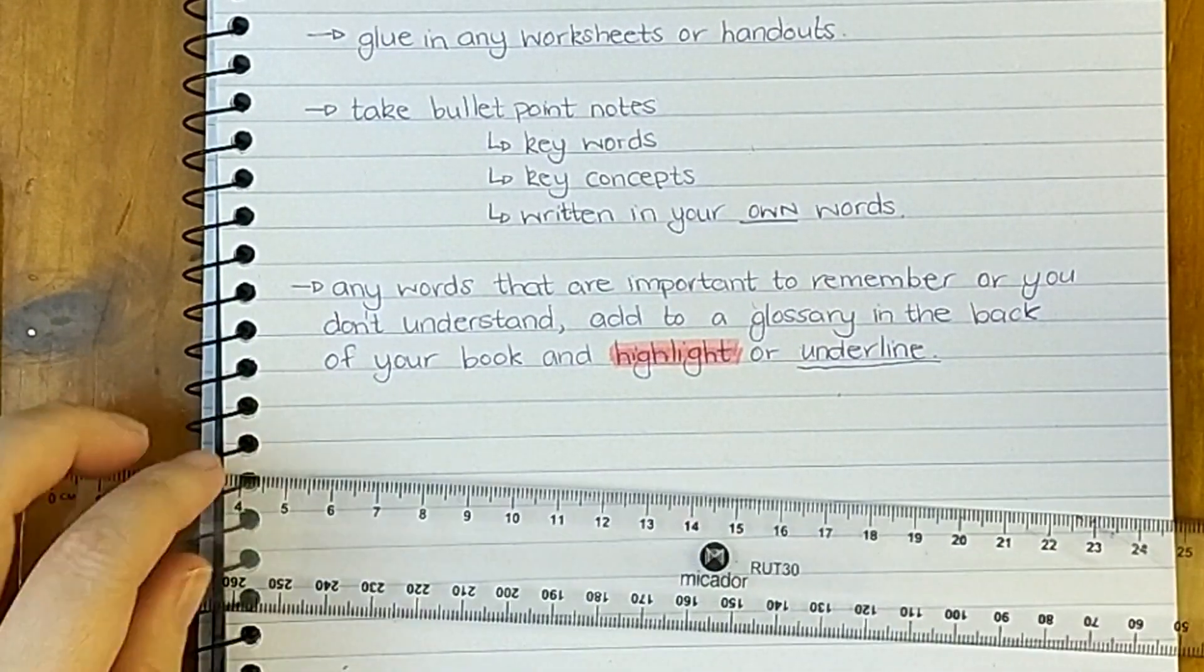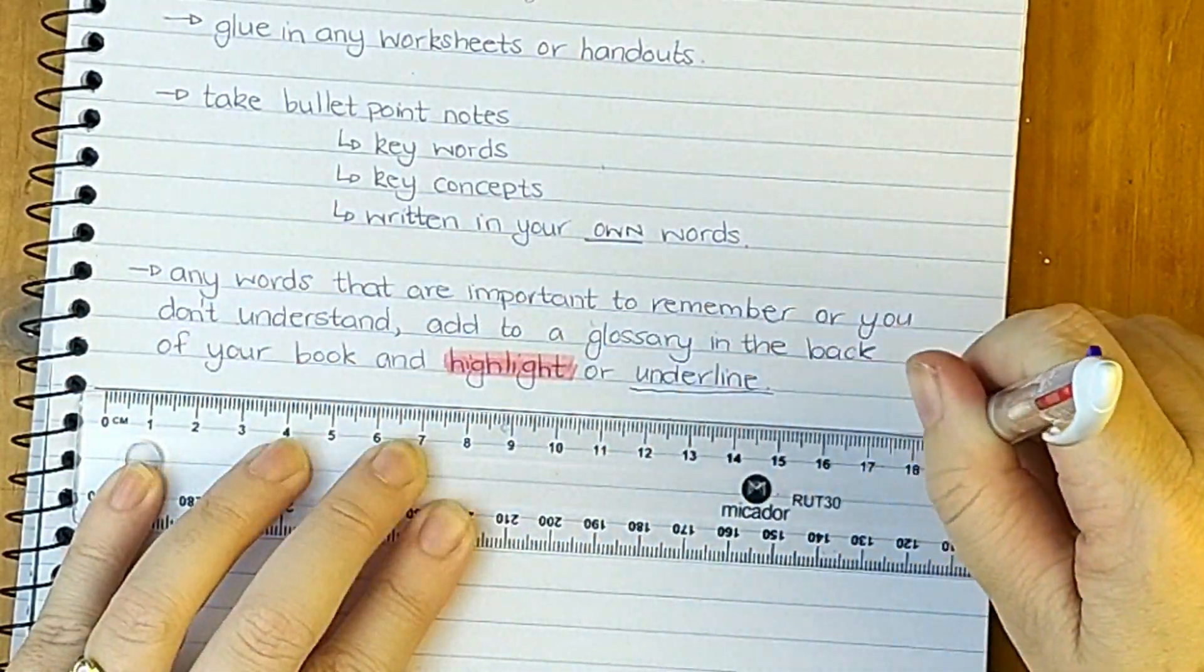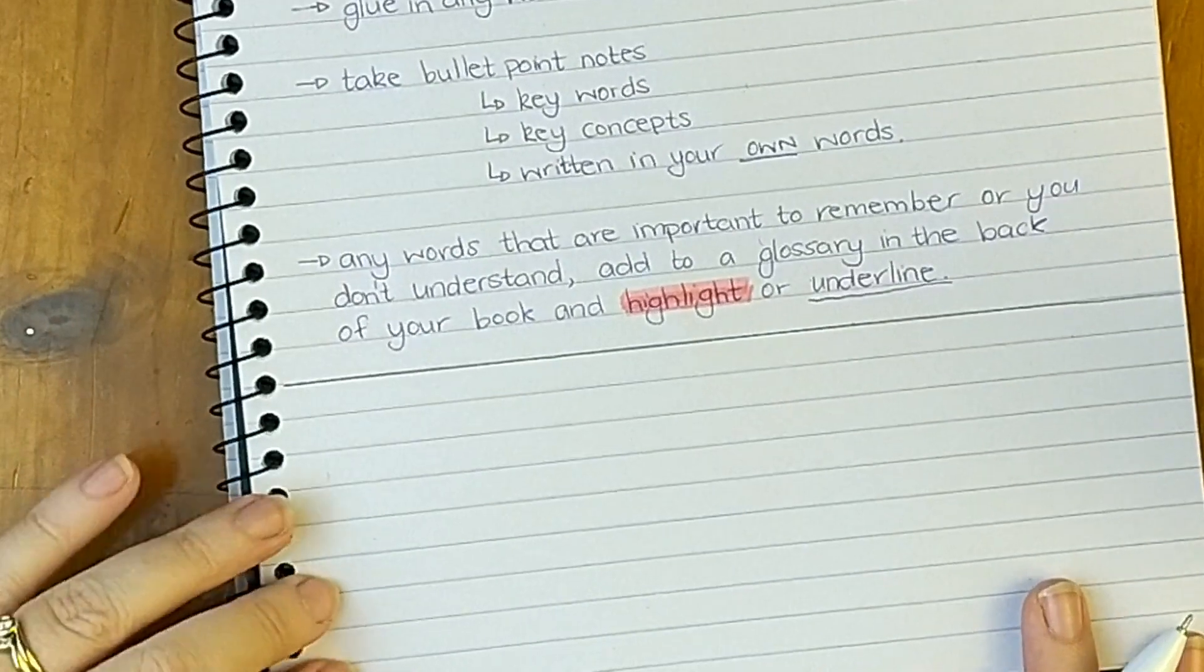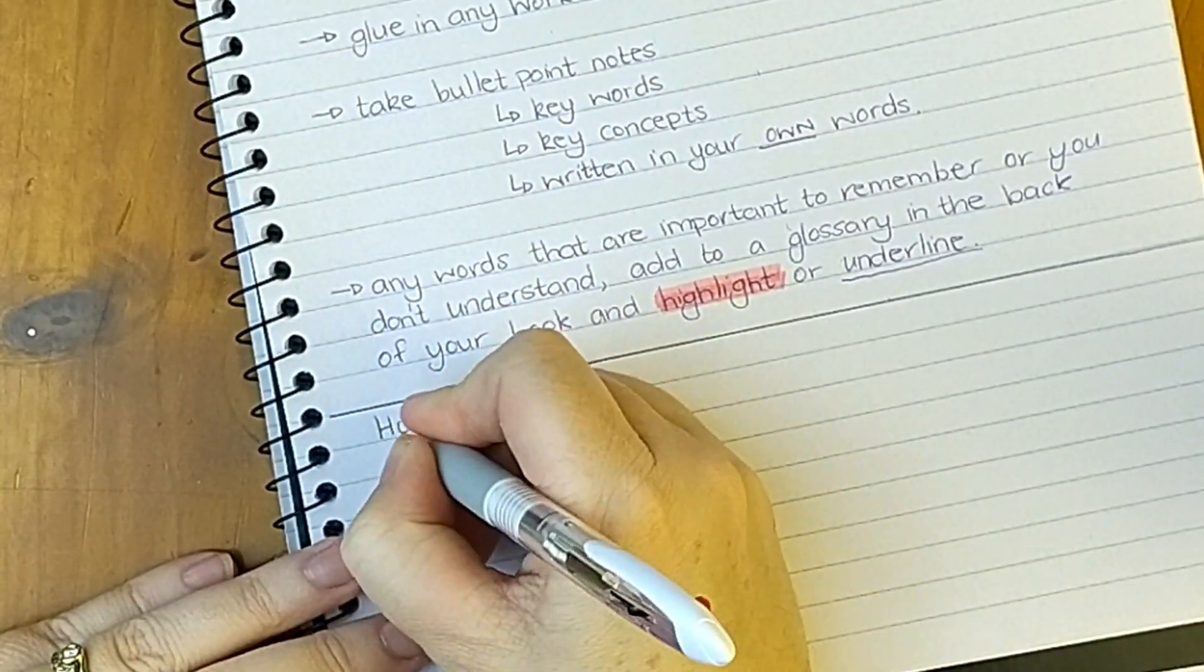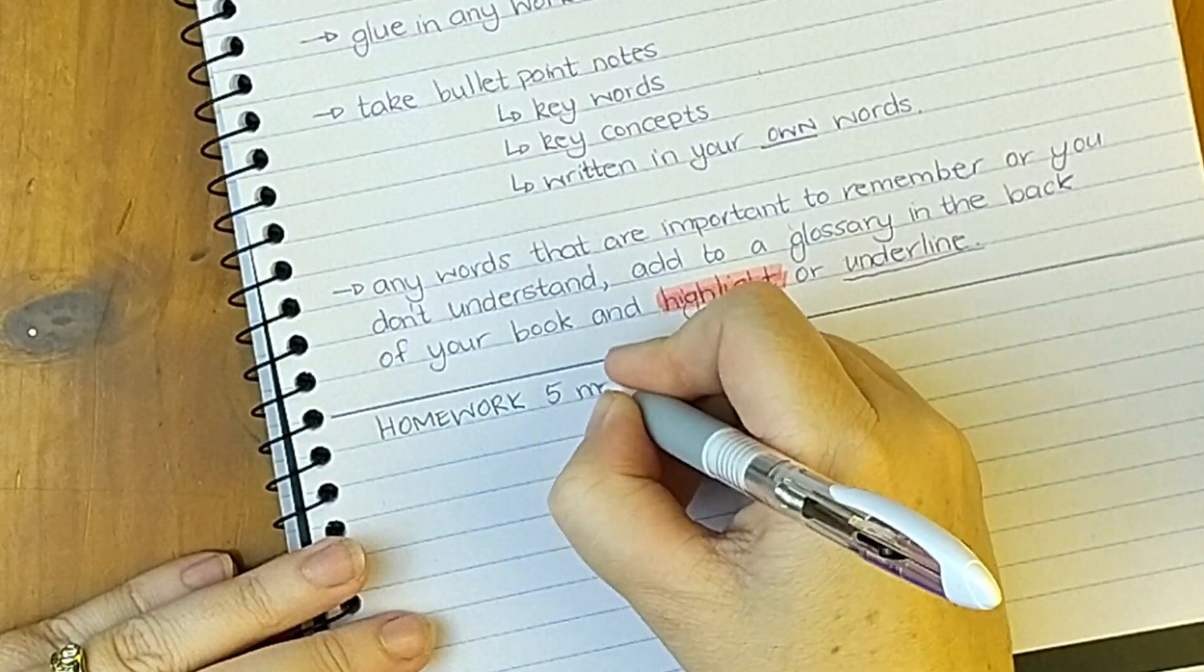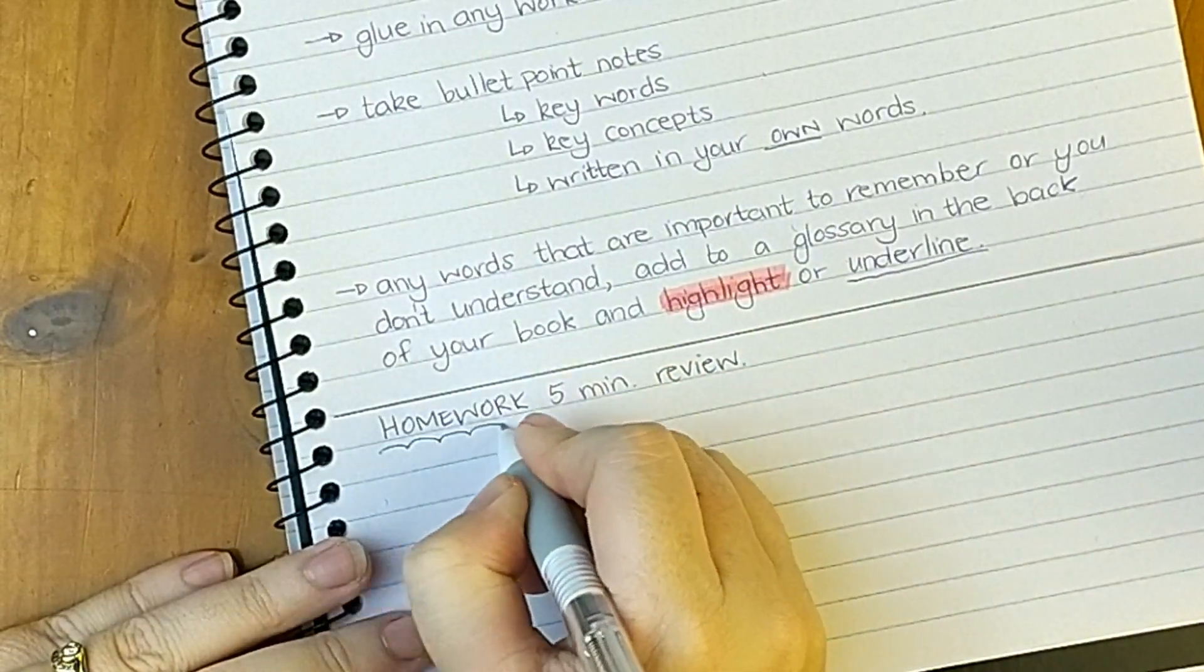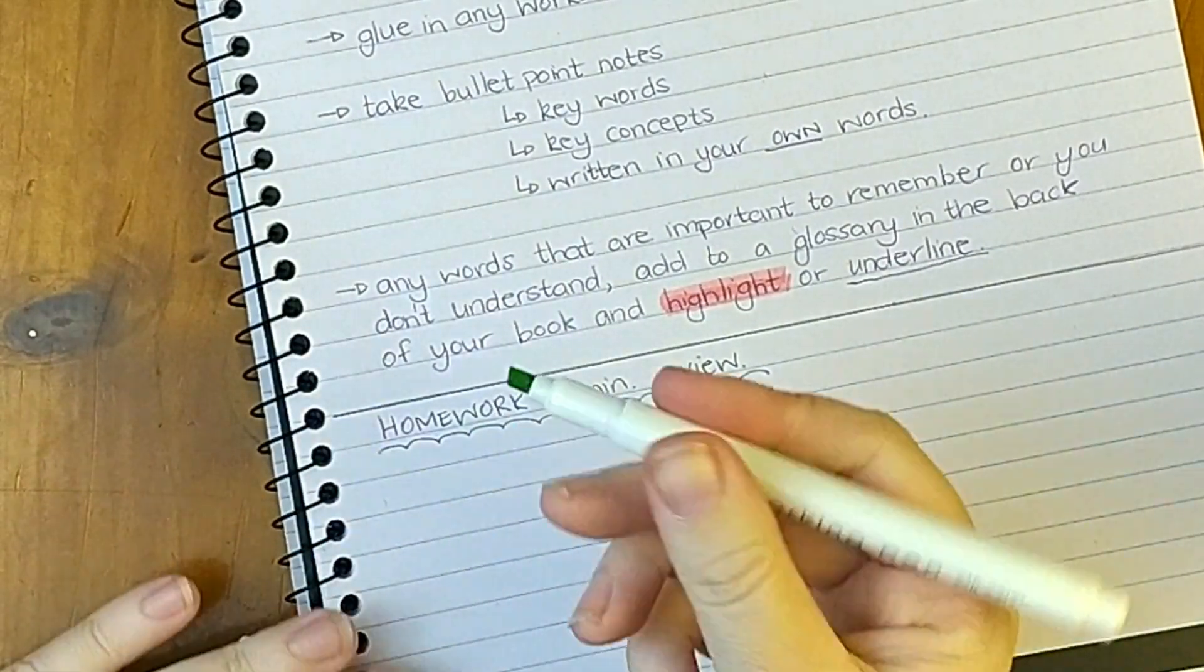At the end of your lesson you want to rule a line to show that you have finished that lesson for the day, but then we're going to add a homework section. Now even if your teacher does not set homework for you in science, a five-minute homework review is essential for learning and essential for retrieval of information later on when you're studying for exams.